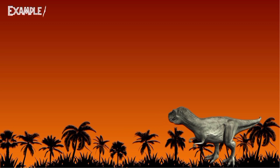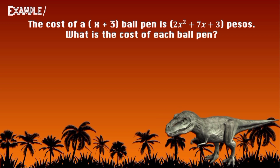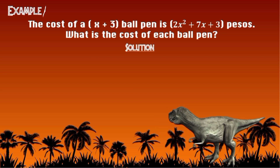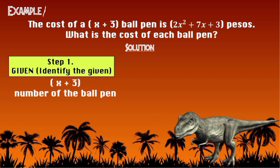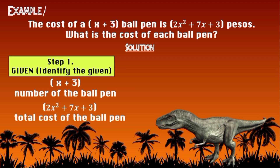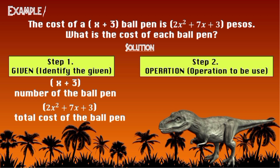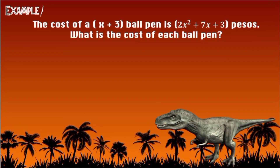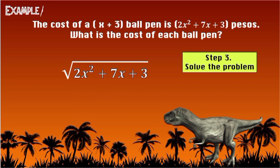Let's have example number one. The cost of X + 3 ball pens is 2X² + 7X + 3 pesos. What is the cost of each ball pen? For step one, identify the given: X + 3 is the number of ball pens, and 2X² + 7X + 3 is the total cost. For step two, the operation to be used is division. For step three, we will divide 2X² + 7X + 3 by X + 3.